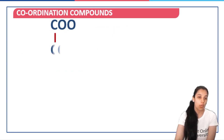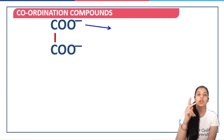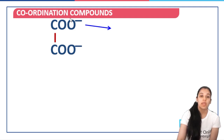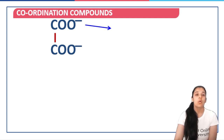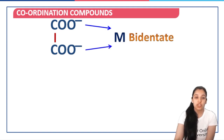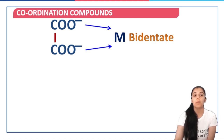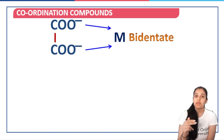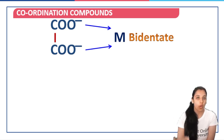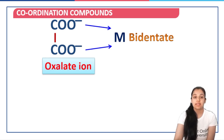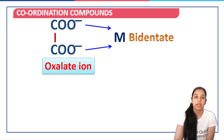Now, if we have oxalate ion — COO-, COO- — there are two oxygen atoms, each with a lone pair, so both atoms within the same ligand are capable of forming a coordinate bond with the metal ion. Such a ligand is called bidentate. Denticity refers to the number of coordinate bonds that can be formed from the same ligand to the metal ion. Bi means 2, tri means 3, tetra means 4, mono means 1, penta means 5, hexa means 6, and so on. The oxalate ion is a bidentate ligand because it has two donor atoms that can form coordinate bonds with the metal atom or ion.